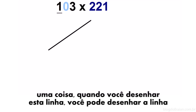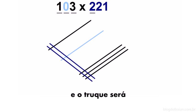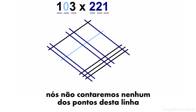You can even use this trick when a number includes zero. But one thing, when you draw this line, you should still draw the line, but put it in a different color or a different marking. And the trick will be that we don't count any of the dots for that line.